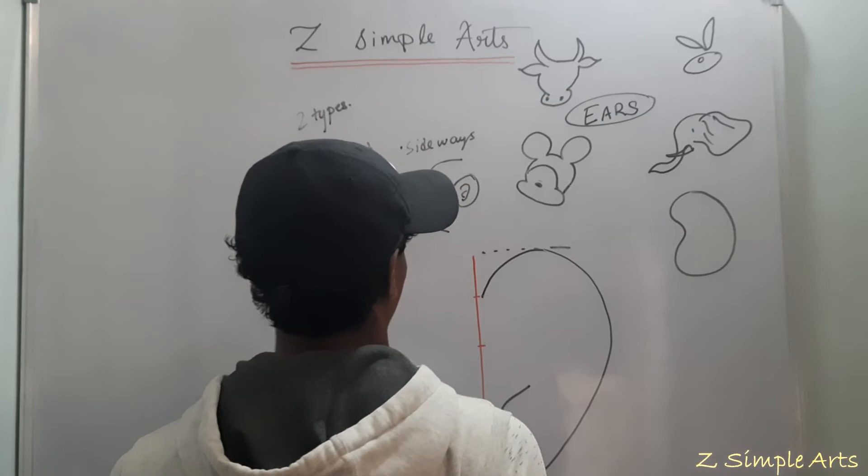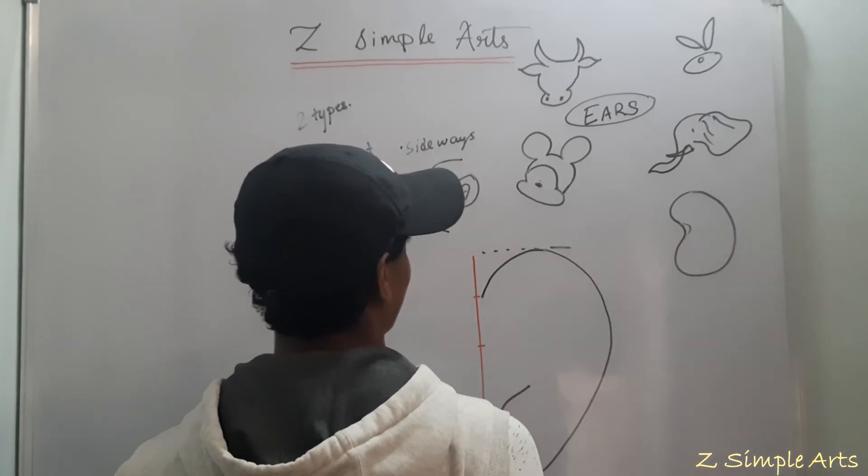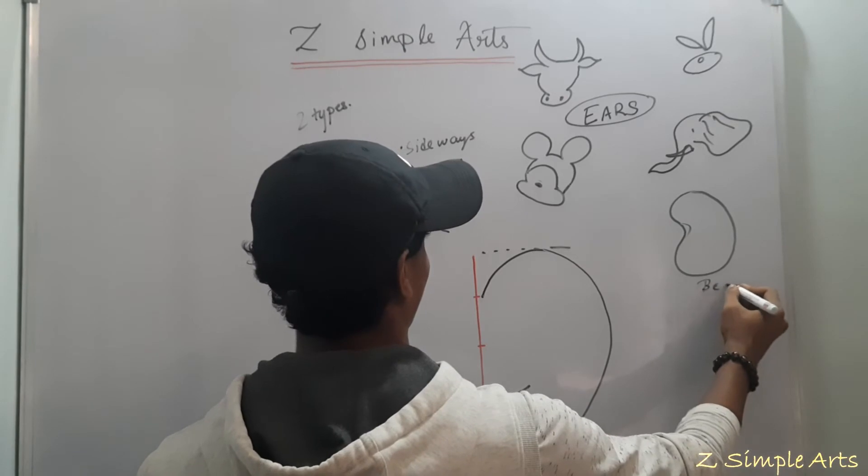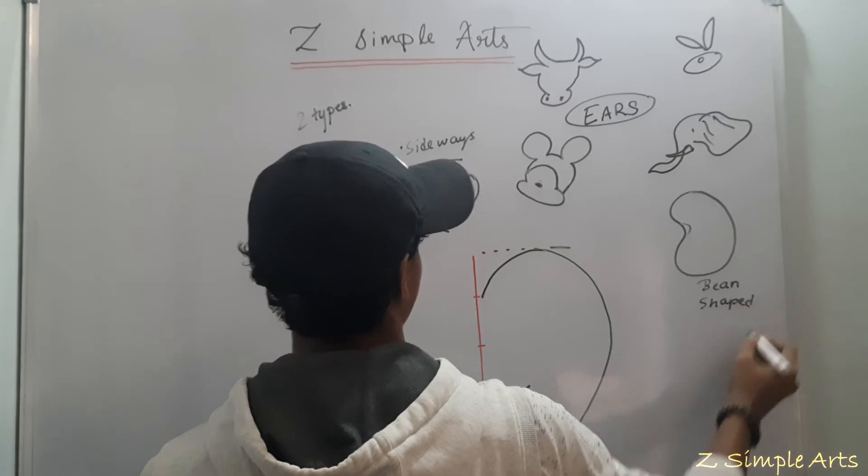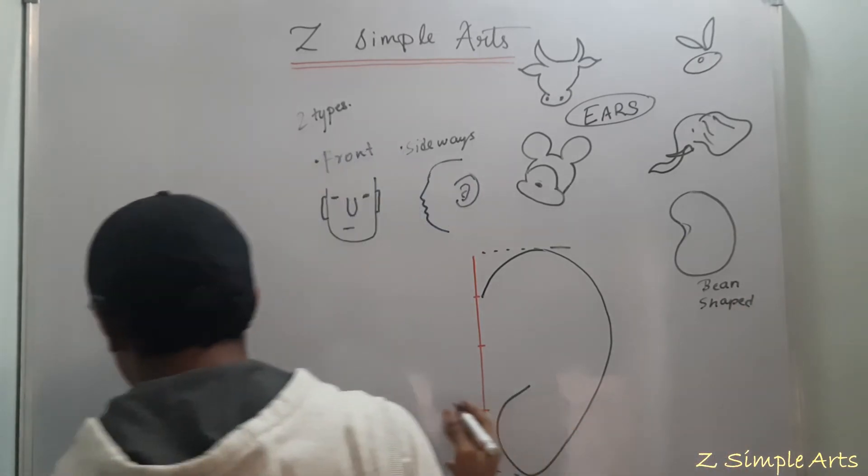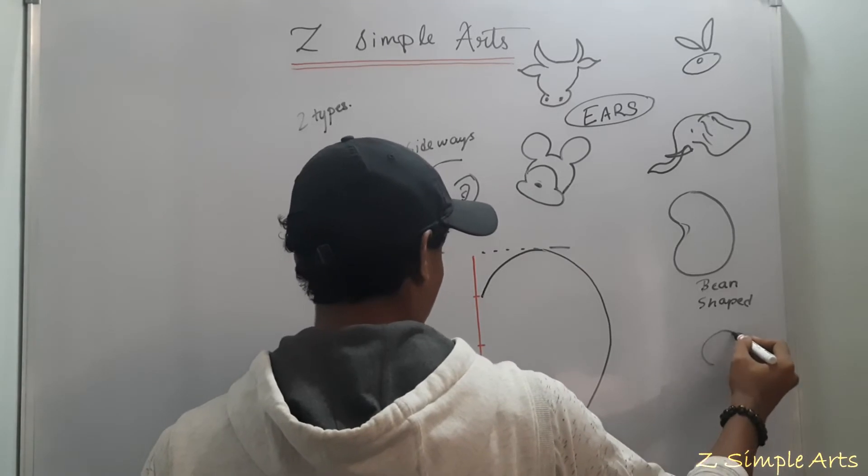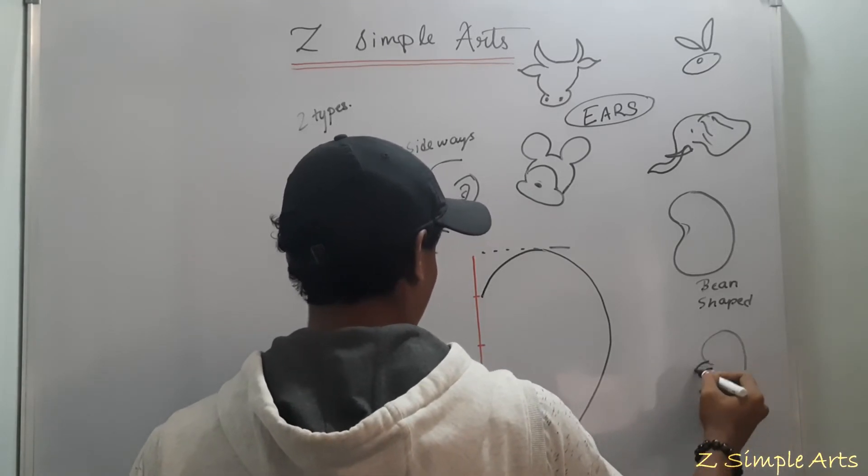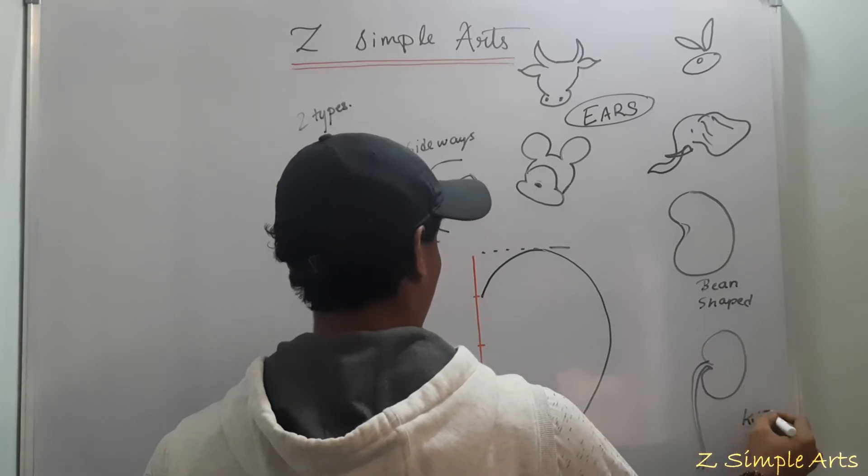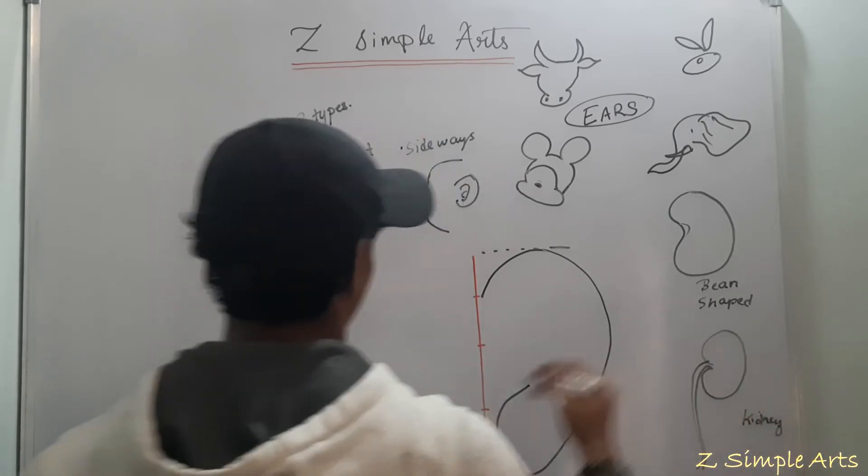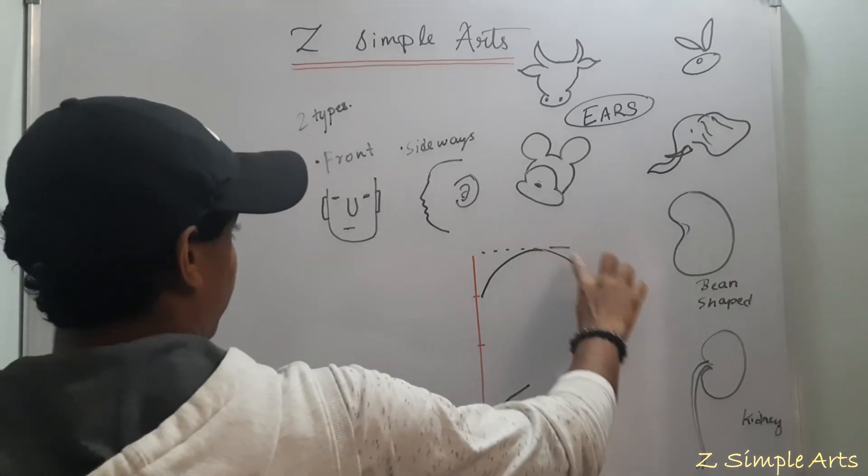Looks familiar. Or it's also comparable to kidney, which is also a bean shape. So draw a bean shape.